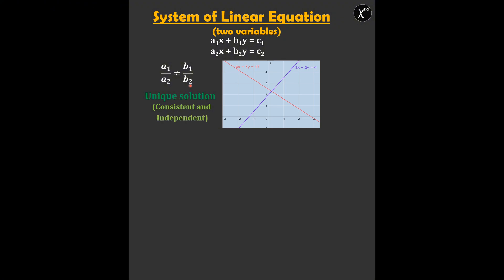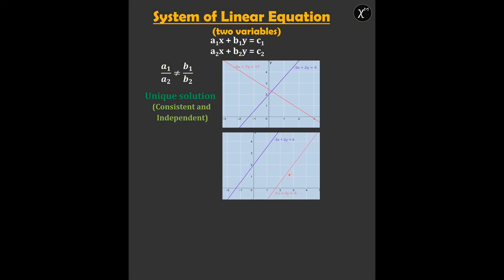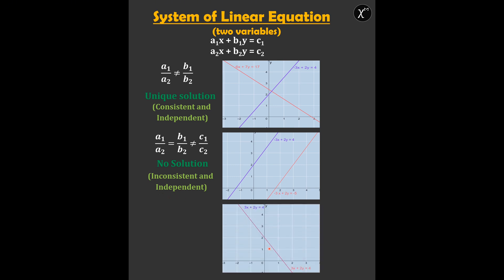Next we have parallel lines. The condition for this is a1/a2 = b1/b2 but not equal to c1/c2. Here we say no solution, or the system is inconsistent and independent. The last is the case of coincident lines — the condition for this is all the ratios should be equal. Here we say infinite solutions, because in a line there are infinite points, and here we say the system is consistent and dependent.